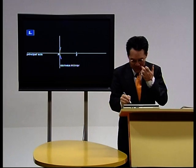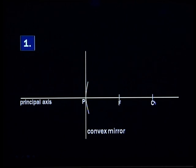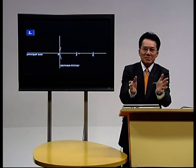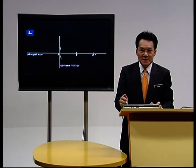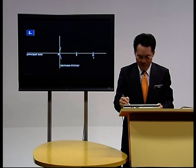Next is C. C is the center of curvature. CF is actually the same distance as FP. You must get this right. Just now I mentioned that PF is 10 centimeters, so PC would be 20 centimeters. Many students always make a mistake in this area — they forget that F is the midpoint of PC.